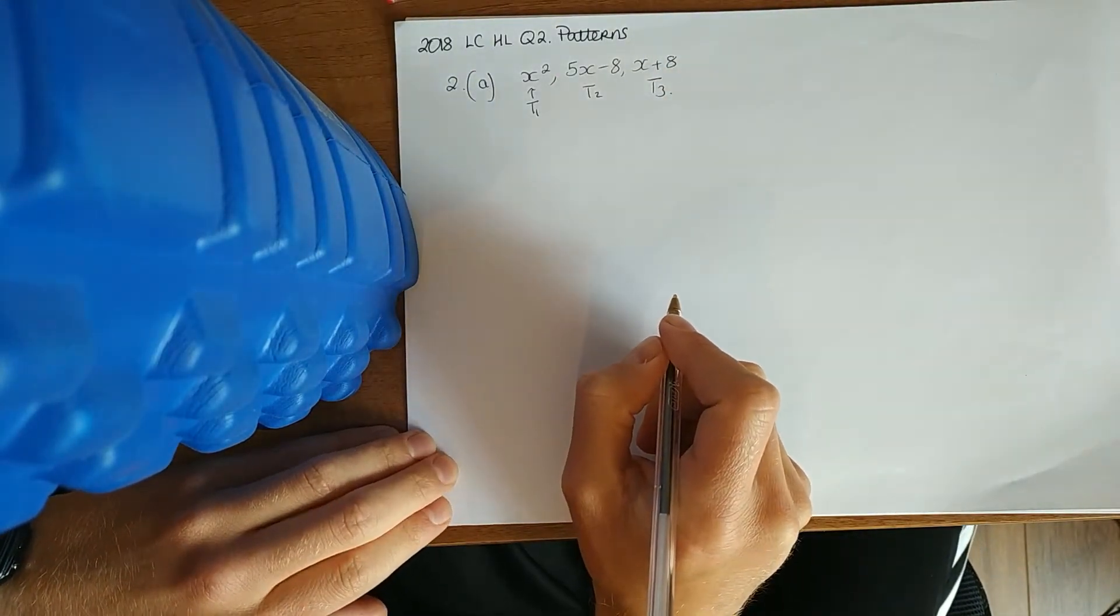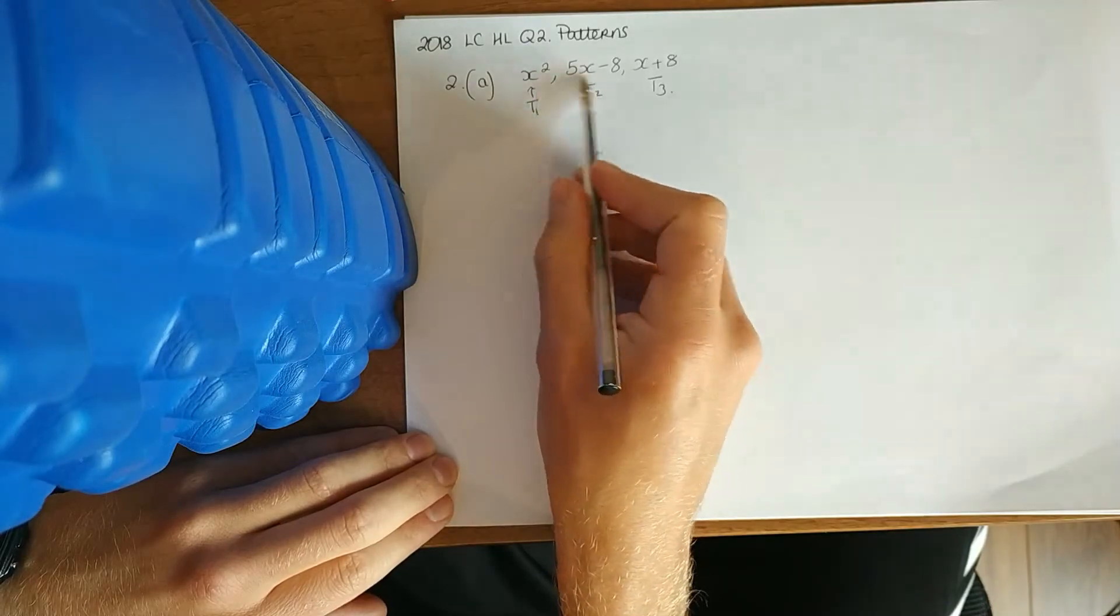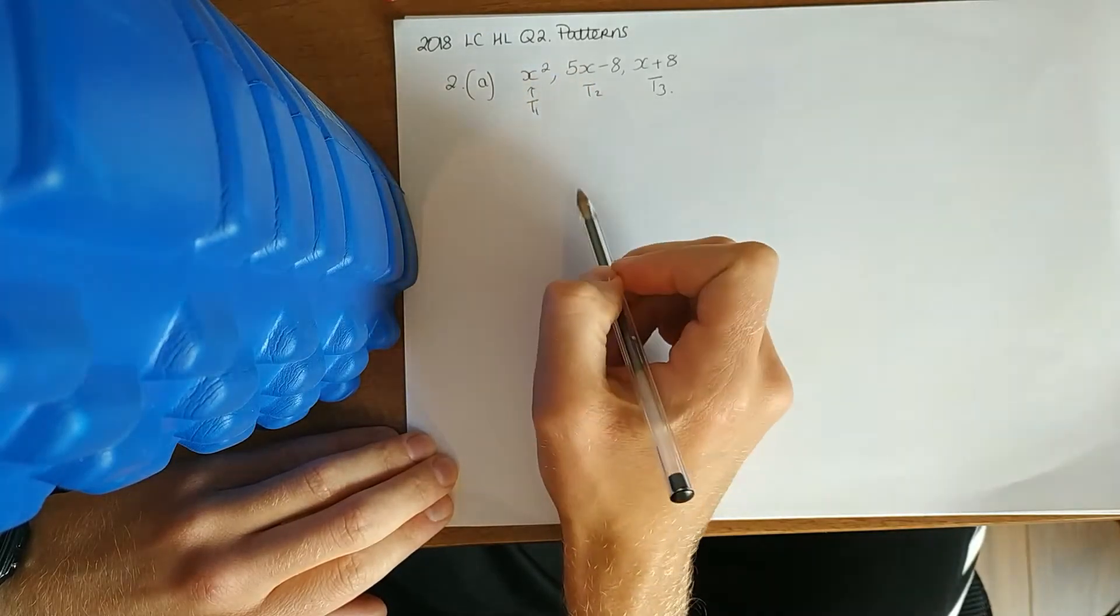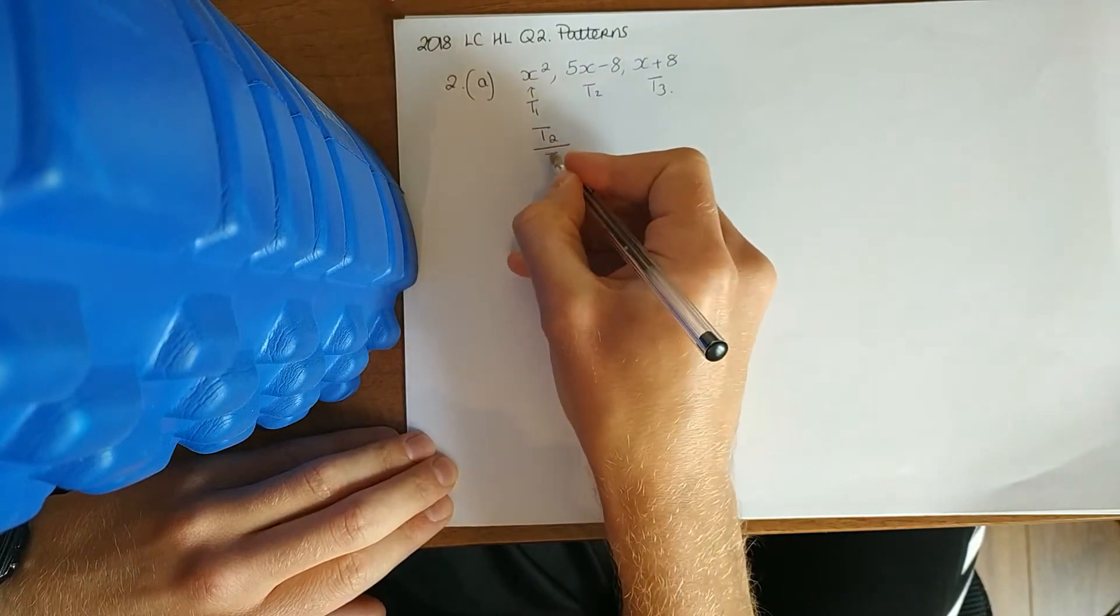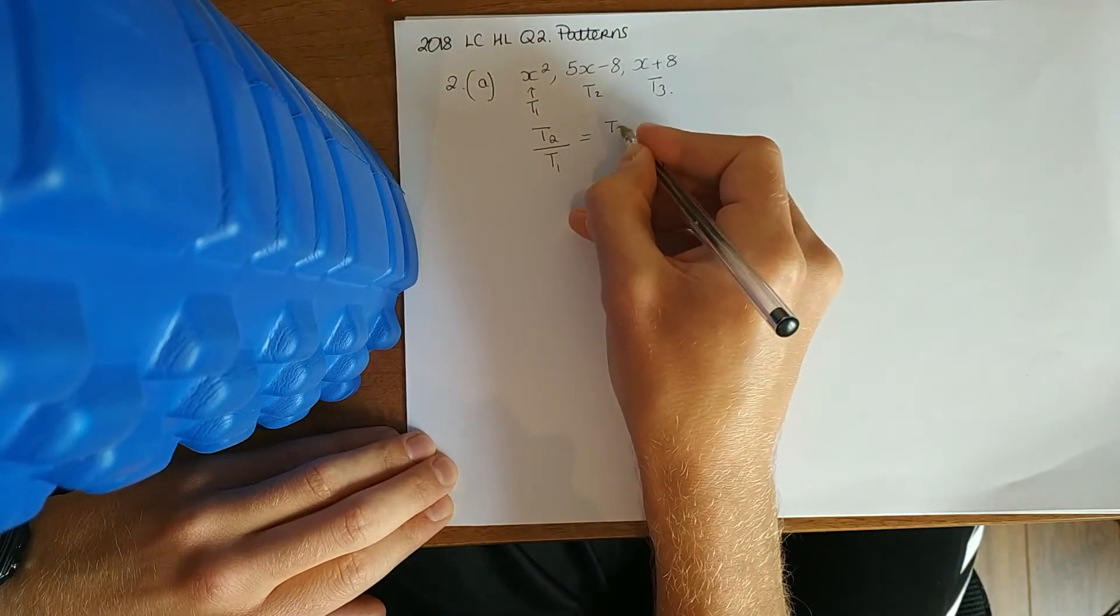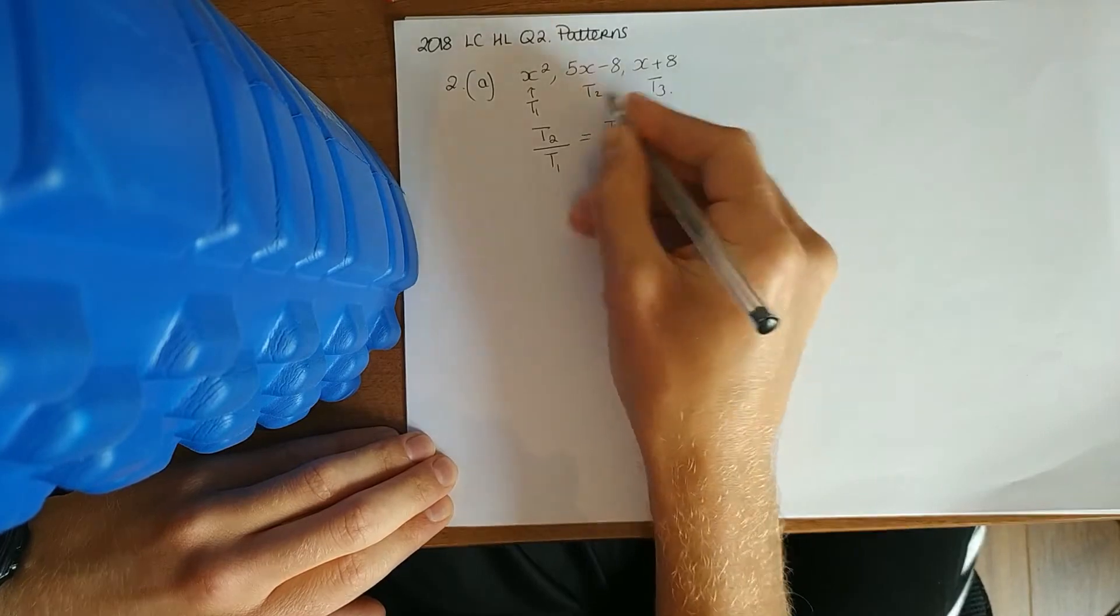Use the common ratio. Now if we don't take them away, that would be for an arithmetic or linear one. Since it's geometric, we use this fact: term 2 over term 1 is the same as term 3 over term 2.